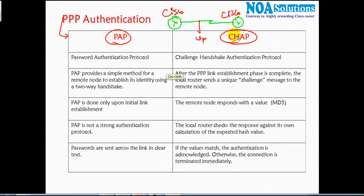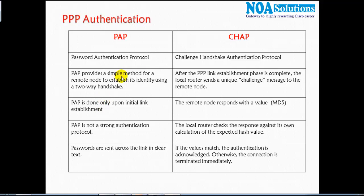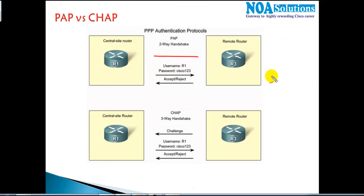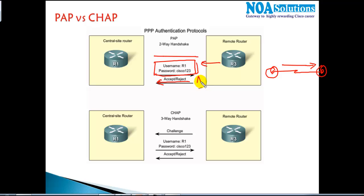PPP authentication can be done using two different methods: PAP (Password Authentication Protocol) and CHAP (Challenge Handshake Authentication Protocol). PAP is a simple two-way handshake process. Whenever a link is established, it sends the username and password. The remote router checks them — if they match, it accepts the connection; otherwise it rejects it. A major drawback of PAP is that the password is sent in clear text, making it less secure.